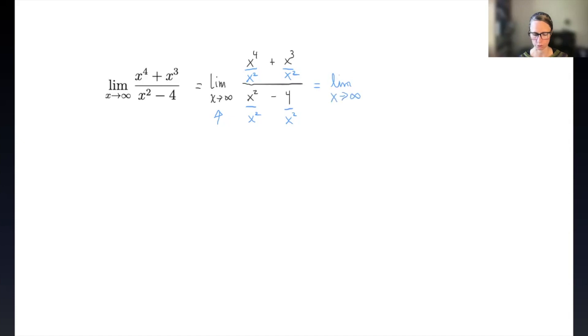So I'm going to keep my limit notation, and then I'm going to take the x to the fourth over x squared and cancel two of the x's, leaving me with x squared, and then the x cubed over x squared. Again, two of the x's cancel out, leaving me with x. The x squared over x squared in the denominator leaves me with 1, and I cannot simplify the last term, 4 over x squared, so I leave that alone.